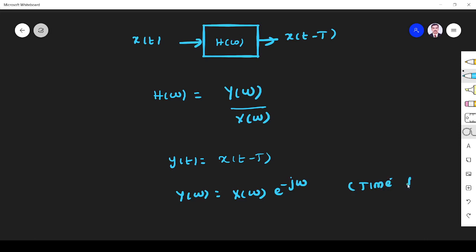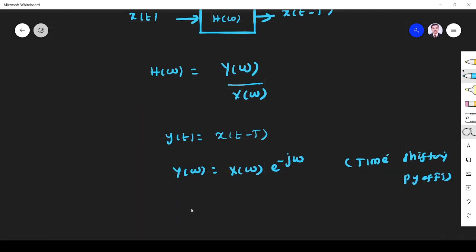Using the time shifting property of Fourier transform, what will happen? Y(ω) by X(ω), that is equal to H(ω). So it is equal to e^(-jωT). You can see after some time the magnitude is unchanged compared to this.